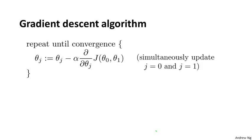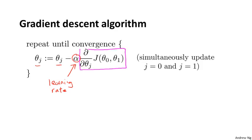Here's the gradient descent algorithm that we saw last time. Just to remind you, this parameter alpha is called the learning rate and it controls how big a step we take when updating the parameters theta j. And this second term here is the derivative term. I want to give you better intuition about what each of these two terms is doing and why, when put together, this entire update makes sense.